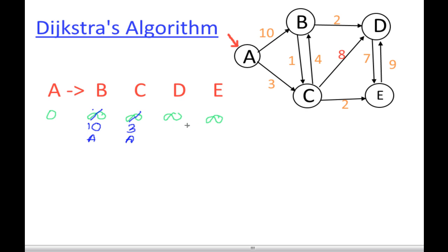Now from all four vertices — two are infinity, C is 3, and B is 10 — we take the minimum edge, which is C. So we pick C, and C becomes the next source node. This is the key difference: each time we select the minimum vertex as the new source node.